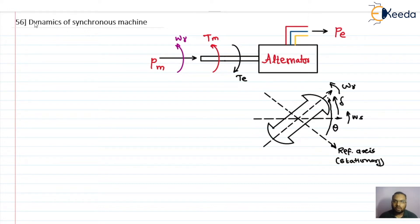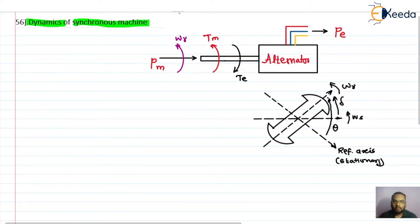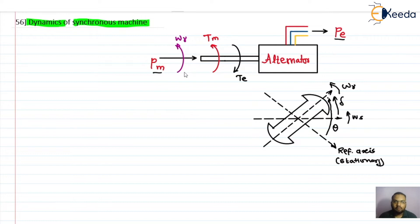Now in this lecture we are going to discuss the dynamics of the synchronous machine — in other words, we are going to obtain the relationship between the inertia constants of the synchronous machine. In this figure you can see the alternator represented here. The output of the alternator is the electrical power shown here, and the input to the alternator is the mechanical power. The shaft of this alternator is rotating at speed omega r, where Tm is the mechanical torque and Te is the electromagnetic torque.